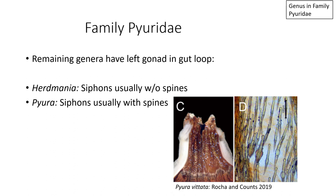How to differentiate Herdmania versus Pyura, which both have stigmata in straight lines? Herdmania usually has oral and atrial siphons without spines. Pyura has siphons usually with spines. These spines are easily visible if you cut open the siphon — they're in the internal tissue lining of the siphon. In photograph C from Rocha and Counts 2019 you can see the spines, which are iridescent. Photograph D is a zoomed-in microscopy view showing the shape of those spines.